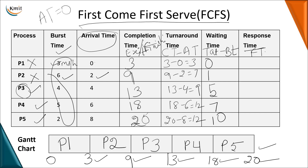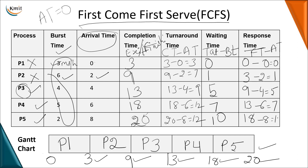Response time is first response minus arrival time. In FCFS, the first response for P1 is at 0, P2 at 3, P3 at 9, P4 at 13, and P5 at 18. Subtracting arrival times: P1 = 0 minus 0 = 0; P2 = 3 minus 2 = 1; P3 = 9 minus 4 = 5; P4 = 13 minus 6 = 7; P5 = 18 minus 8 = 10. The response time and waiting time values are the same because FCFS is a non-preemptive algorithm.